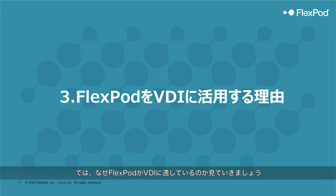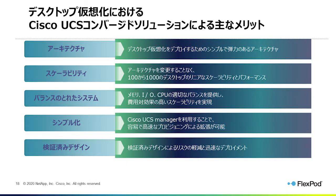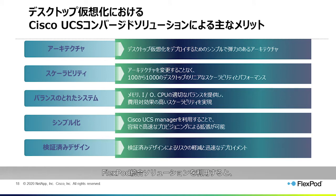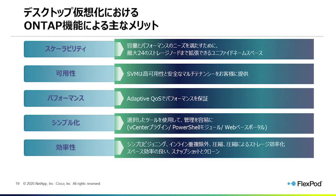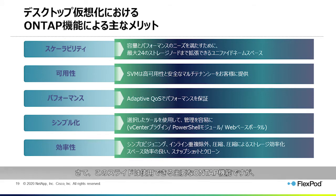With the FlexPod Converged Solution, we provide a straightforward, resilient, balanced system that is easy to deploy, manage, and scale. Our validated design reduces the risk associated with implementation and increases system performance. Here are the key ONTAP features used for VDI, which we will cover in much more detail in subsequent slides.